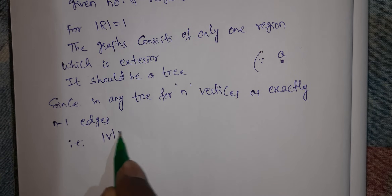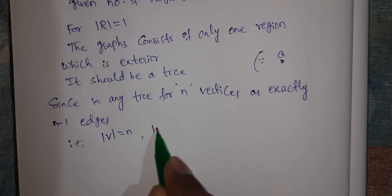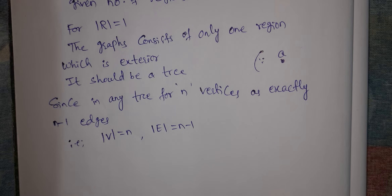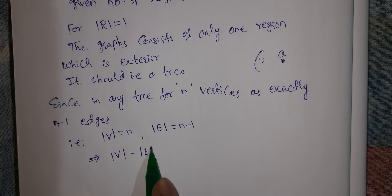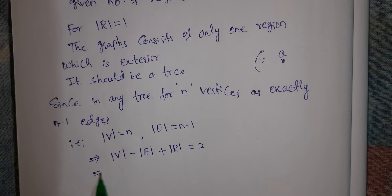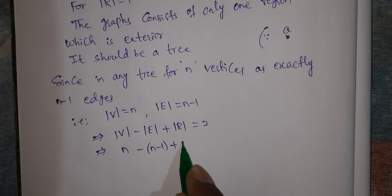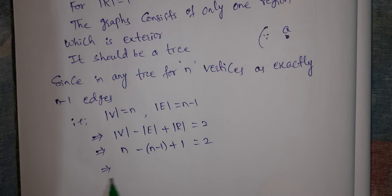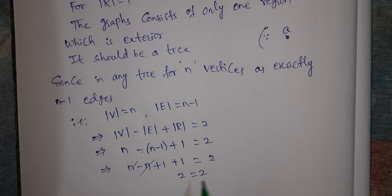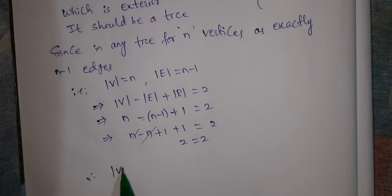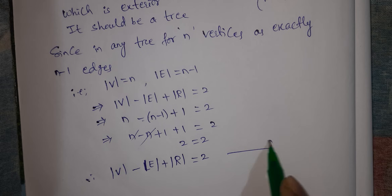That is, V equals n and E equals n minus 1. That implies V minus E plus R equals 2. Vertices: n, edges: n minus 1, plus regions: 1. That equals n minus (n minus 1) plus 1 equals 2. Therefore, V minus E plus R equals 2. This is equation number 1.